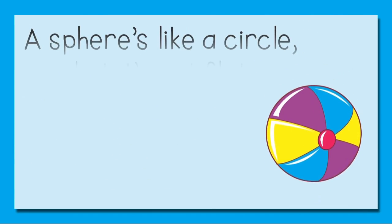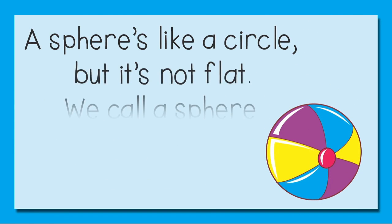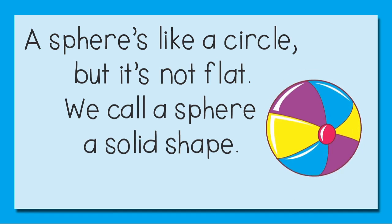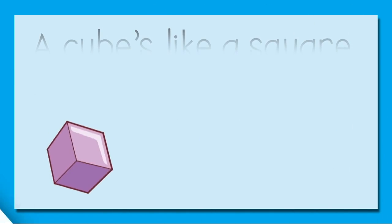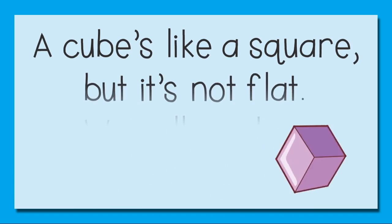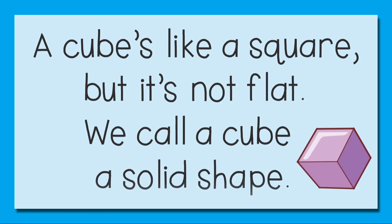A sphere's like a circle, but it's not flat. We call a sphere a solid shape. A cube's like a square, but it's not flat. We call a cube a solid shape.